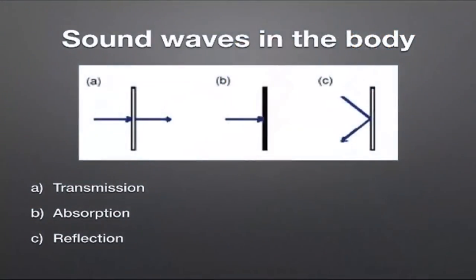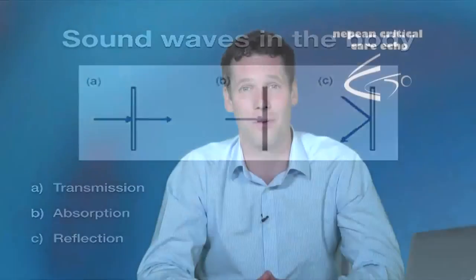Sound waves in the body can be transmitted between structures and continue through — allowing imaging of structures deeper than visible ones. They can be absorbed, with energy transferred to heat. They can be reflected — which is how we see structures. And they can be diffused, when a sound wave hits a structure and scatters in many directions, causing loss of reflections that aren't picked up by the transducer.